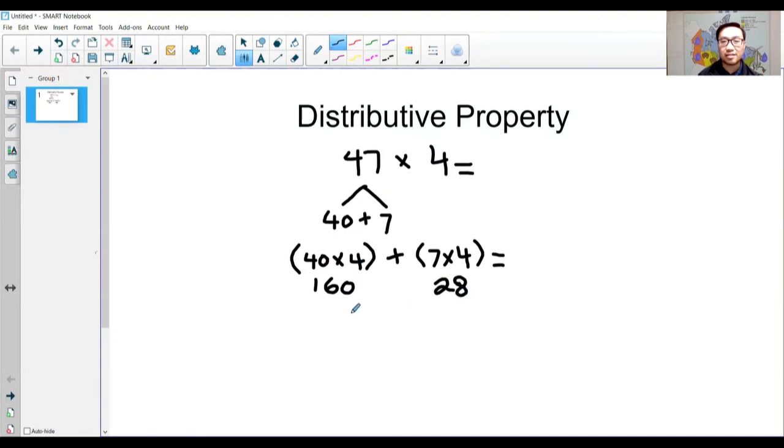Now, I can add these two numbers together. 160 plus 28 is equal to 188. So, 47 times 4 is equal to 188.